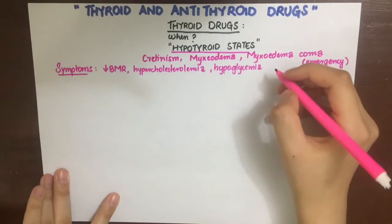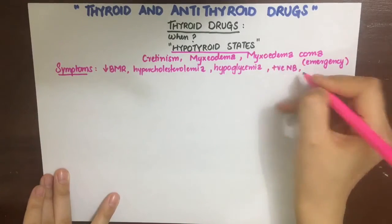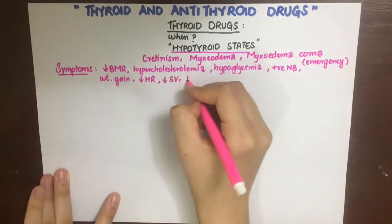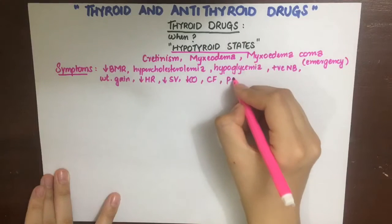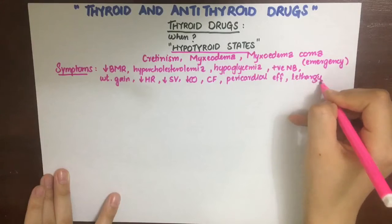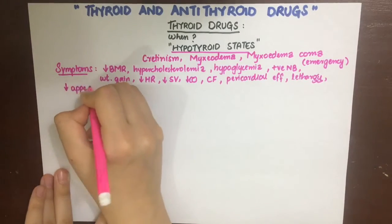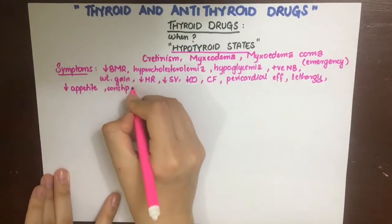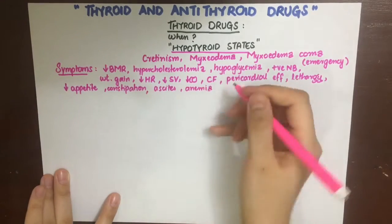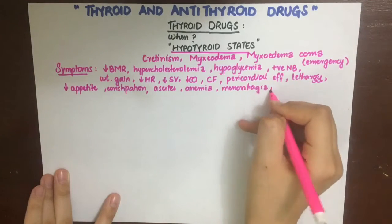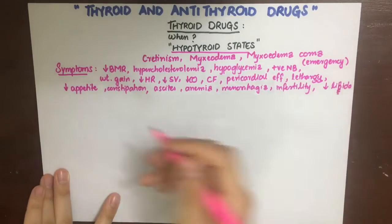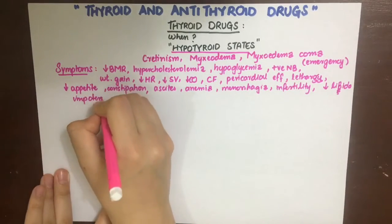The metabolic effects of hypothyroidism include decreased BMR, hypercholesterolemia, hypertriglyceridemia, hypoglycemia, positive nitrogen balance, weight gain, decreased heart rate, decreased stroke volume, decreased cardiac output, cardiac failure, pericardial effusion, lethargy and mental retardation, stiffness and muscle fatigue, decreased appetite, constipation and ascites, anemia due to decreased RBC production — which may be normochromic, hyperchromic, or hypochromic — and menorrhagia.